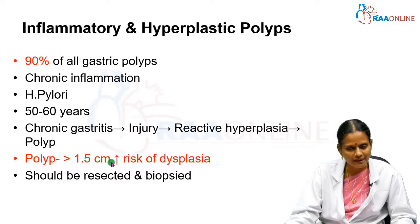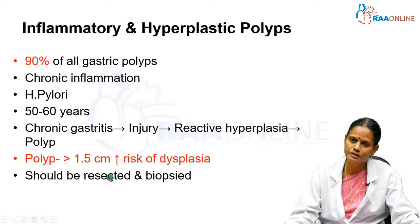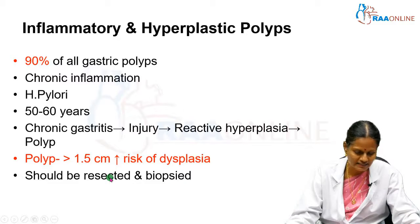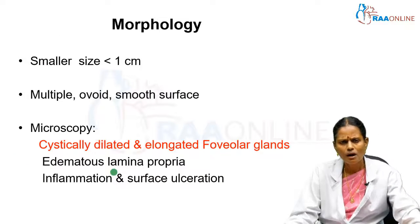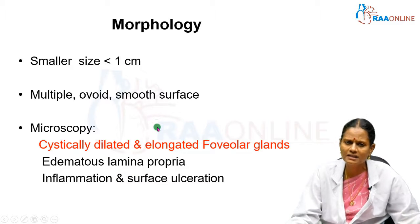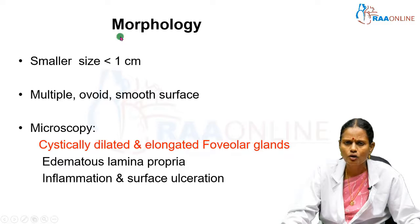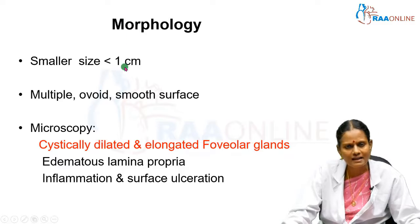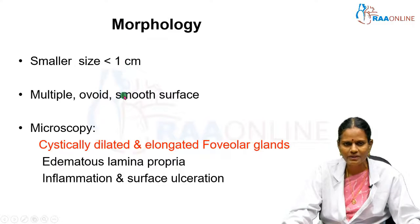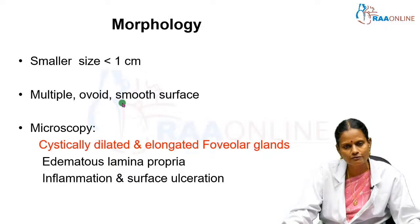Therefore, they should be resected and sent for biopsy for histopathological examination. Morphologically, inflammatory or hyperplastic polyps are smaller in size, usually less than 1 cm. They can occur as multiple polyps, have a smooth surface, and are ovoid in shape.